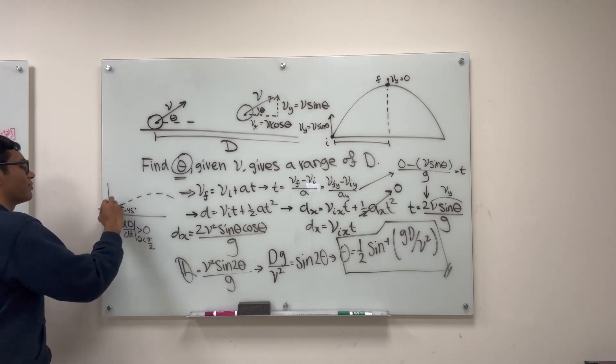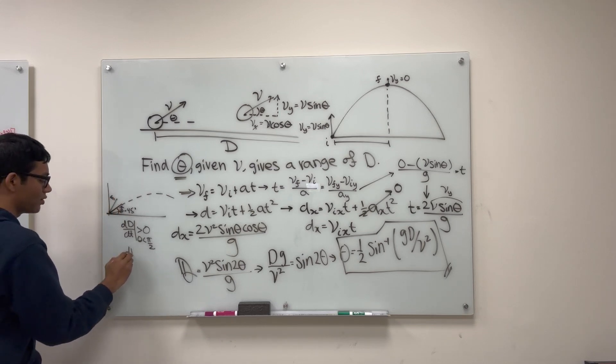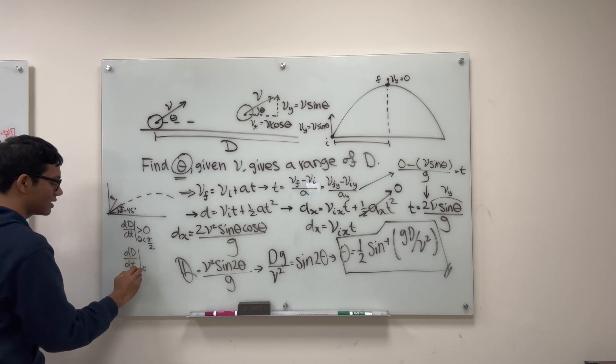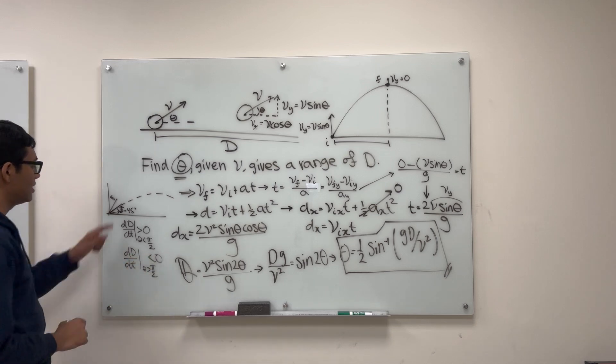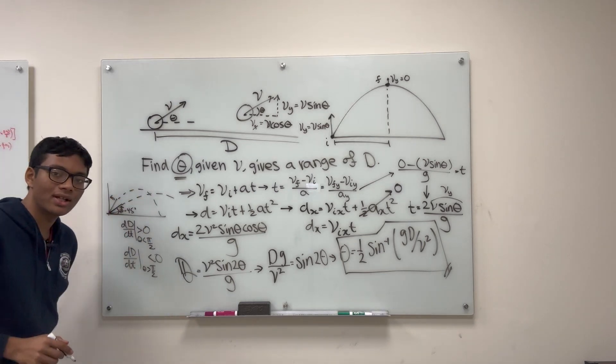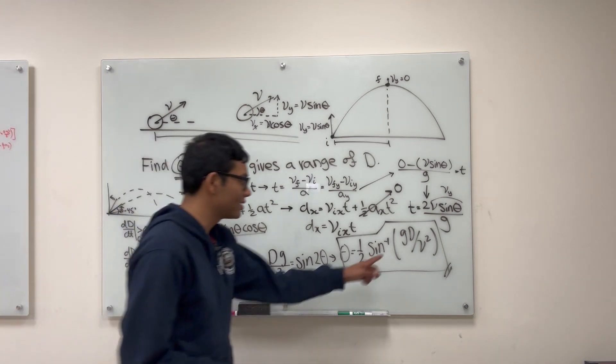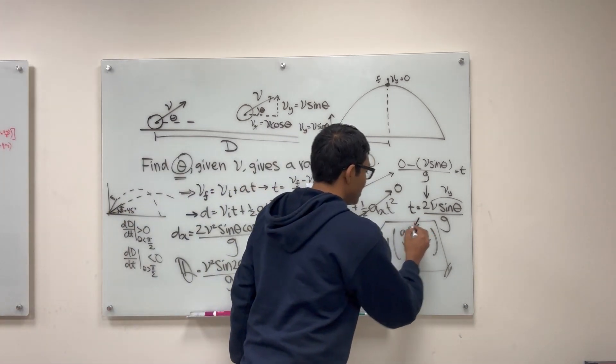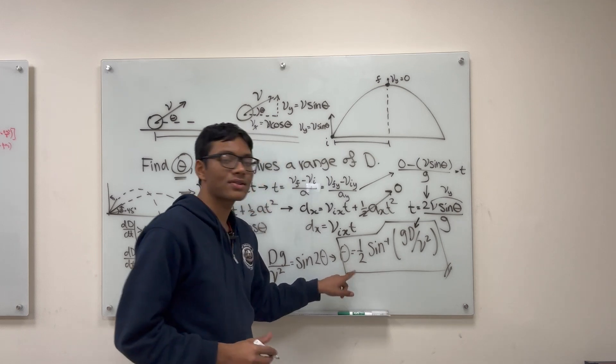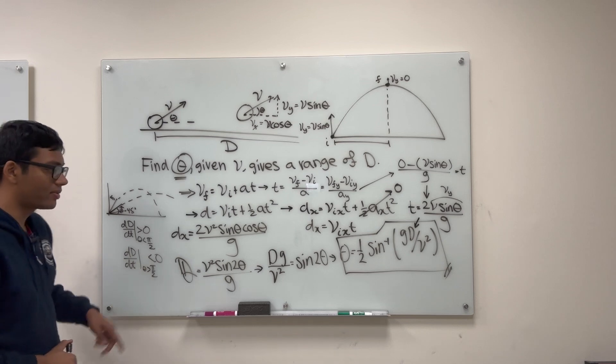But if you're starting from theta is greater than pi over 4 and then you increase your angle for the ball's initial velocity, if theta is greater than pi over 4, then the range of the ball will actually decrease because you've already crossed the 45 degree max range point. So the change in how d changes with theta is actually not very trivial. It depends on where you're starting from.